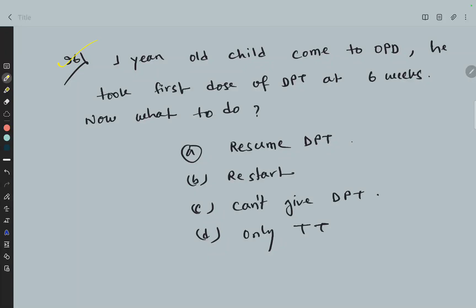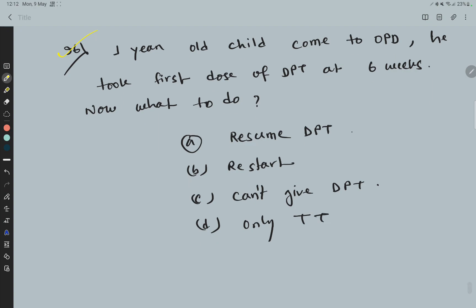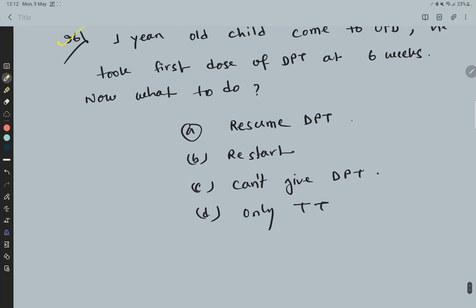Question 96: A one-year-old child comes to OPD. He took the first dose of DPT at 6 weeks. Now what to do? Options: a) Resume DPT, b) Restart, c) Can't give DPT, d) Only TT. The answer is resume DPT.